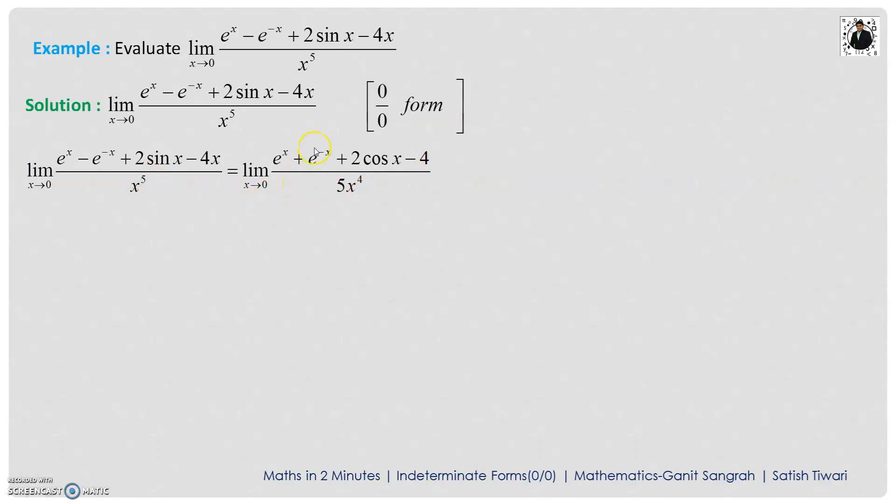Okay. Now put the 0 here. e to the power 0, 1, e to the power 0, 1. Cos 0 is 1. This is 1 plus 1 plus 2. It is 4. 4 minus 4 is what? It is 0. Again, it is in the 0 by 0 form. Again, you apply L'Hôpital's rule and you have to apply L'Hôpital's rule till we get the finite value.